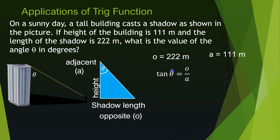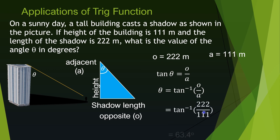To solve for theta, we use arc tangent (inverse tangent) — written as θ = arctan(o/a). Note that inverse tangent is not the same as one over tangent. Scientific calculators have this function. Plugging in the values, the ratio is 222/111 = 2, so theta equals arctan(2), and you get that angle from your calculator.